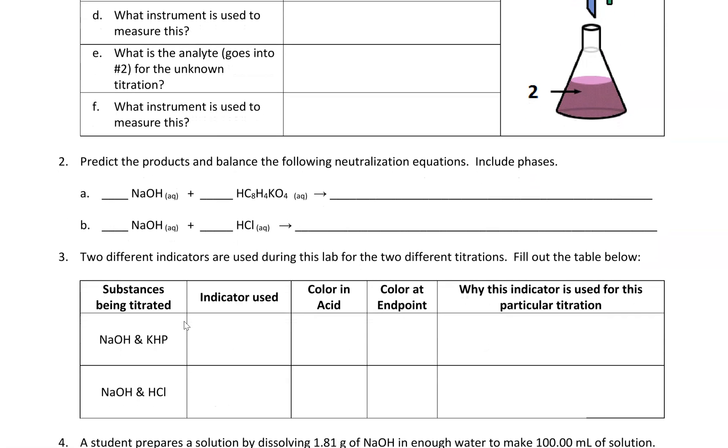Predict the products and balance the following neutralization equations. Include phases. Let's talk about these reactions a little bit. Over the course of the lab, you're going to be running two sets of titrations. The first one is going to standardize sodium hydroxide, and the second is going to determine the effectiveness of the antacid tablets.